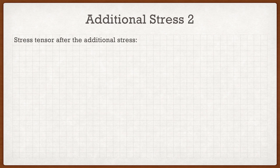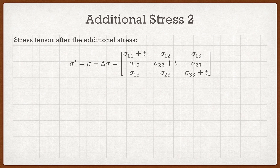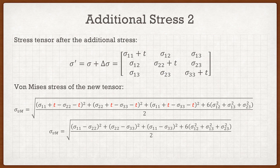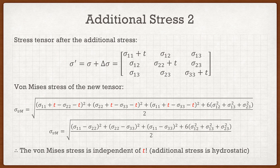Now for the second additional stress — the hydrostatic case. After adding delta sigma, our Cauchy stress matrix has sigma_11, sigma_22, and sigma_33 each increased by T. Throwing this into the von Mises formula, in the first three terms we get plus-T minus T, plus-T minus T, plus-T minus T — the T cancels every time. This simplifies back to the original von Mises stress equation, and T disappears entirely. So no matter what value of T you choose, it won't add any von Mises stress whatsoever — the von Mises stress is independent of this hydrostatic T.